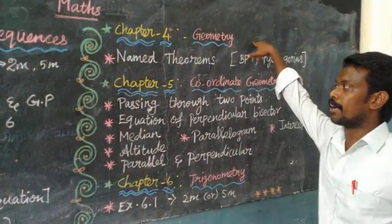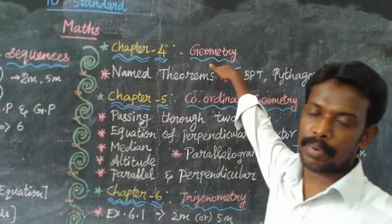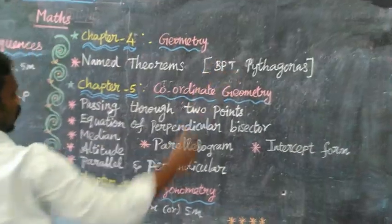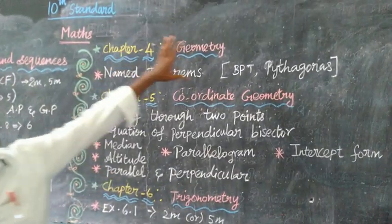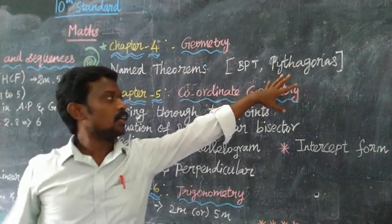Chapter 4: Geometry. The named theorems are the same as BPT, especially BPT theorem and Pythagoras theorem. These are 5 mark questions.